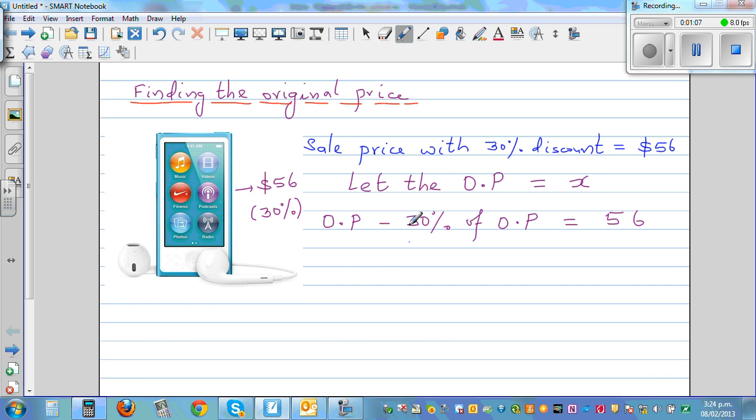That's what is given. 30% was taken off from the original price, and then that price was 56. So if the original price is X, I can say in place of OP, I can write X minus...